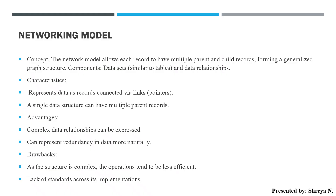The second model is the networking model. In the network model, each record can have multiple parent and child records. One record related to multiple parents and children — that is the network model. It uses a graph structure, and its major components are data sets and data relationships.